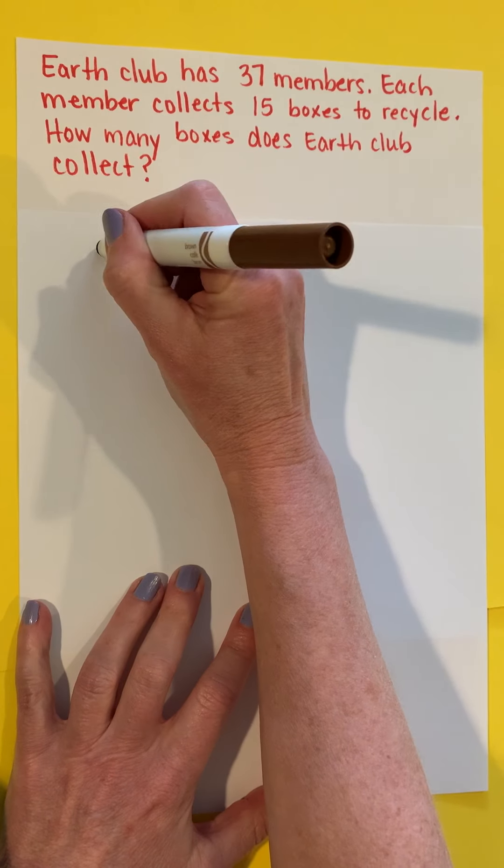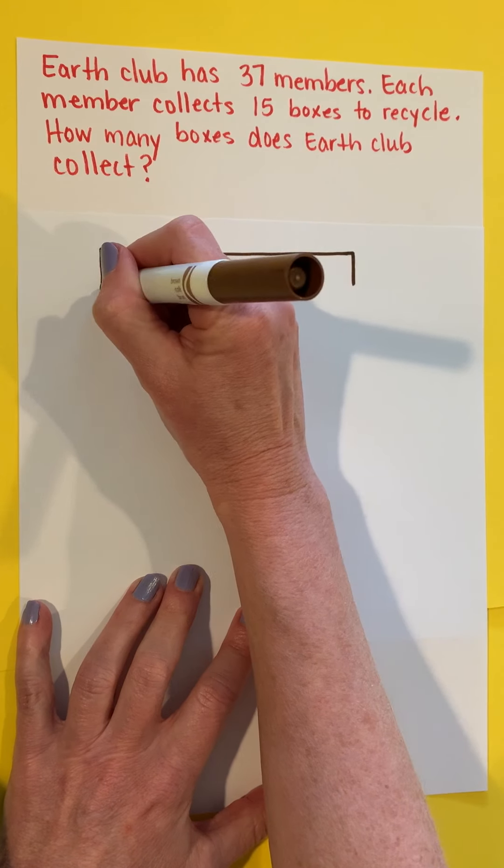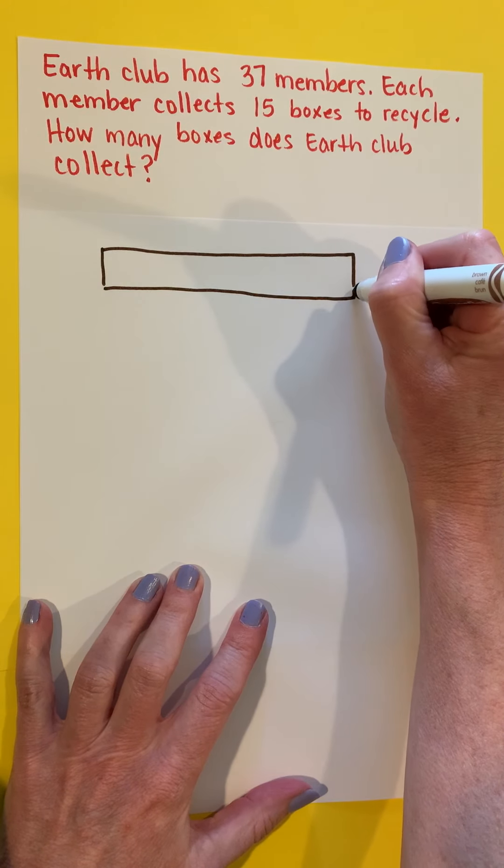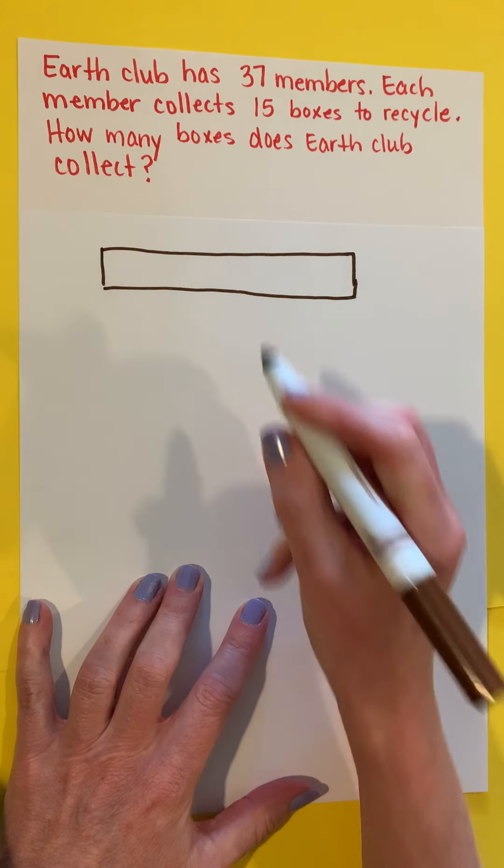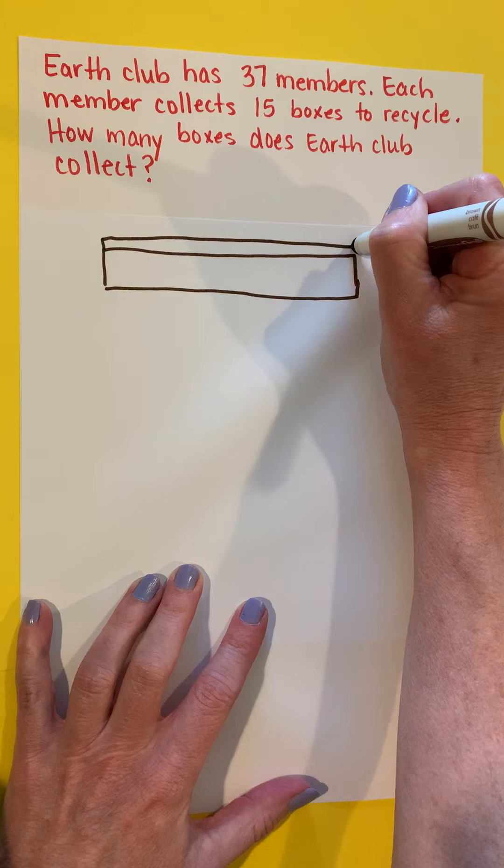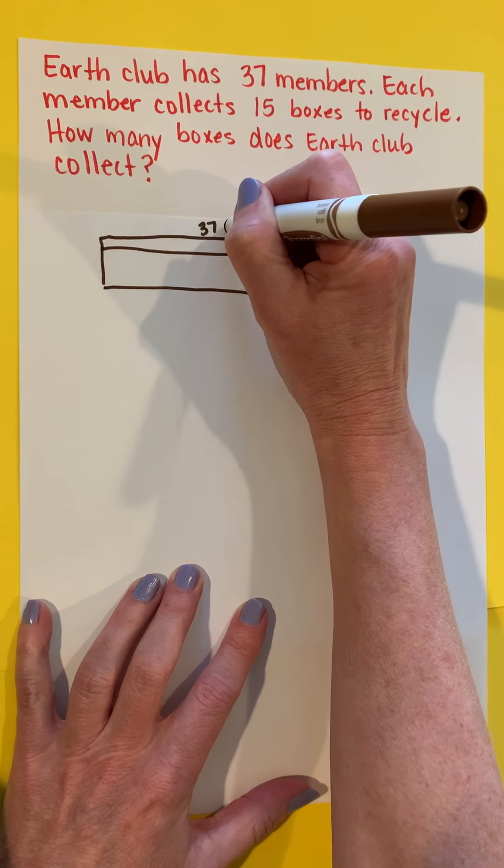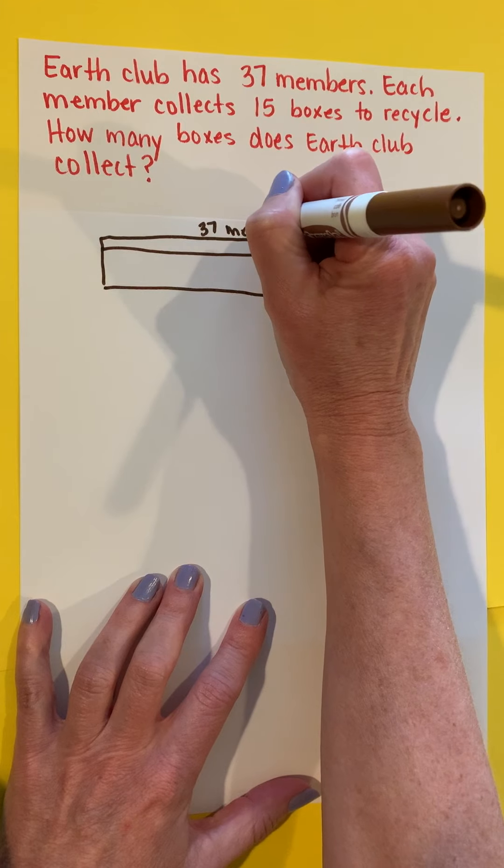Usually in my bar model, I would draw out exactly how many parts there are. But this time, I've got 37. That's a lot of boxes in there, so I'm just going to represent that this way. This shows me that that bar stands for all 37 members.